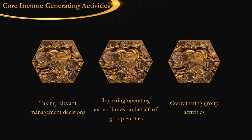The third core income generating activity is coordinating group activities. There will be many activities for a company, such as marketing, HR, IT, finance, tax, etc. Coordinating group activities means ensuring that activities are coordinated and organized in a way that produces the best outcome for the group. These are the three core income generating activities of a headquarters business.